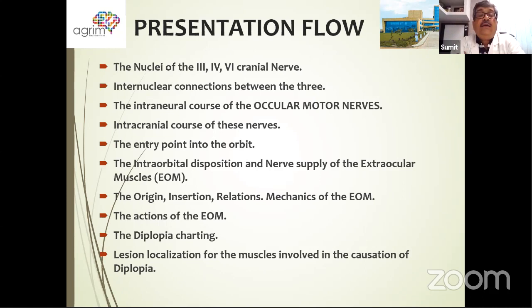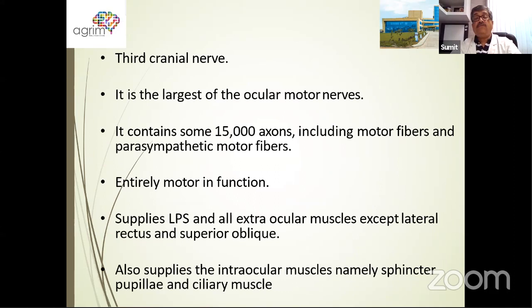We will cover their intracranial and intraneural courses and connections, and finally the approach to a patient with double vision in terms of localization for the site of the lesion and to some extent the type of lesion. The presentation flow: first we will discuss the third, fourth and sixth cranial nerve nuclei, their internuclear connections, the intraneural and intracranial courses of the ocular motor nerves, their entry into the orbits, intraorbital disposition and nerve supply of the extraocular muscles, their origin-insertion relations, actions, diplopia charting and lesion localization.